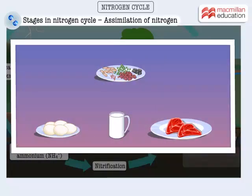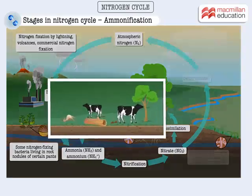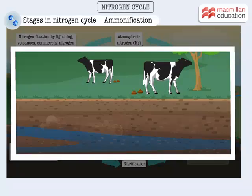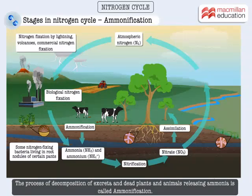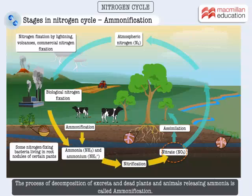We humans get our requirement of nitrogen in the form of proteins from both plants and animals. The excreta of animals as well as dead plants and animals are decomposed by certain microorganisms present in the soil. This decomposition produces ammonia, which is then available for other biological processes, putting nitrates back into the soil.